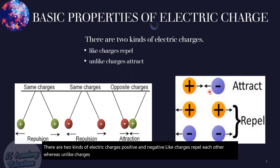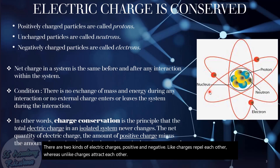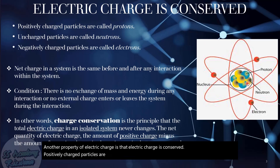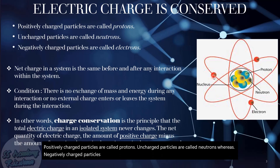Another property of electric charge is that electric charge is conserved. Positively charged particles are called protons, uncharged particles are called neutrons, whereas negatively charged particles are called electrons that revolve around the nucleus in elliptical orbits.